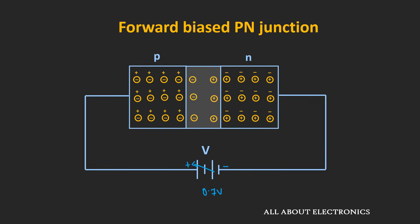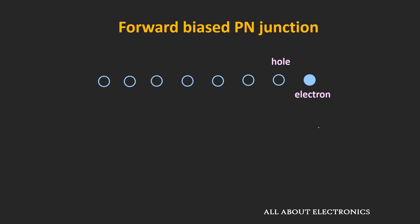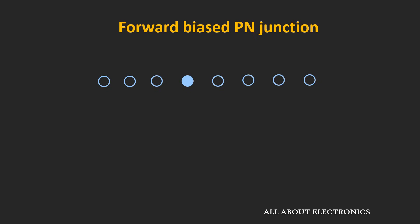A hole is nothing but the absence of an electron at a particular location. So whenever electrons are moving from right to left, we can say that holes are also moving from left to right. Due to the movement of electrons, we also get the movement of holes, and in this way we get a flow of current due to both electrons and holes.